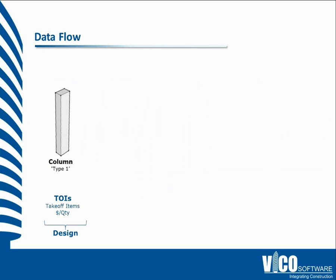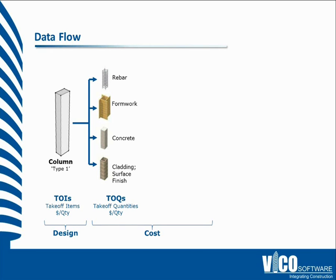The core part of our data flow is how we connect things from a 3D model. For example, we could take a very basic box inside of a 3D model that represents a column. But modeling systems don't know what that column represents as far as tasks you have to perform and items that you need to buy to perform them. What we do in our system is connect that box in a CAD model to the things that you need to do to get that built.